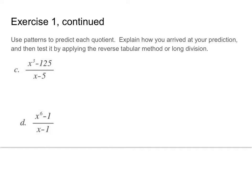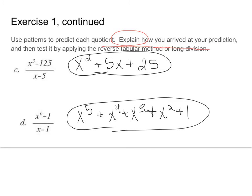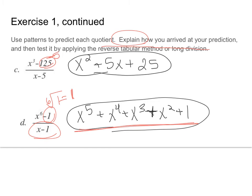Still doing x minus a. Use the patterns to predict each quotient, explain how you arrived at your prediction, and then test it by applying the reverse tabular method. With both of these problems I used the pattern from the previous slide. The cube root of 125 is 5. Here, the 6th root of 1 is 1, so I'm dividing by x minus 1. There are 1s as your a term for every single one of these.